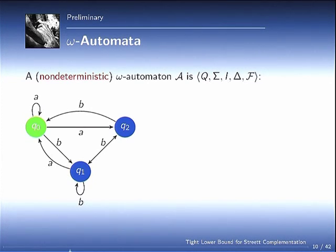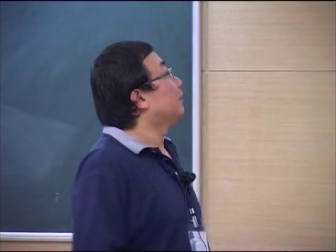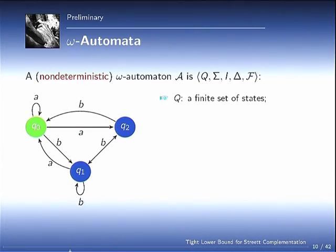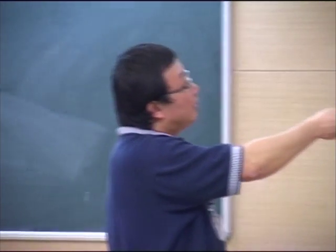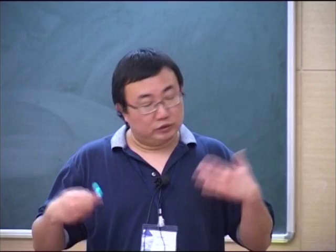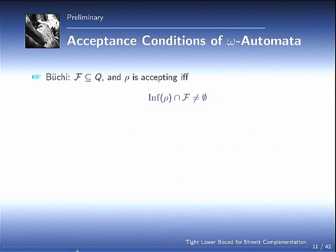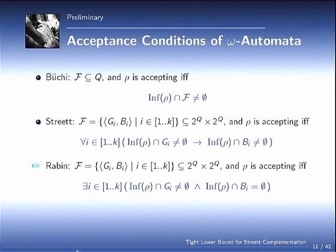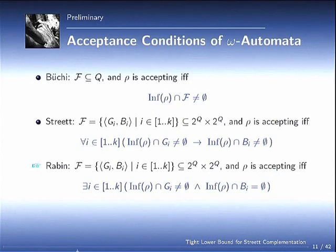A quick introduction to notations. Basically, what is an omega automaton? It's just a classical NFA, non-deterministic automaton, with special acceptance conditions. Almost everything is the same as before. Everything is the same as before, except this F could take many forms, and this F is called acceptance conditions. Omega automata are classified according to acceptance conditions. For Büchi, basically, the inf(ρ) means the set of states that is visited infinitely often by ρ. If the run visited F infinitely many times, then this run is accepted.